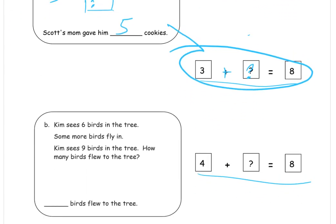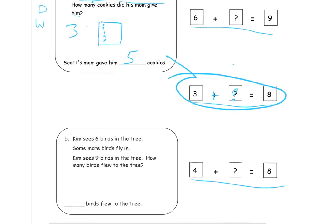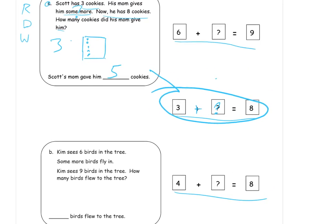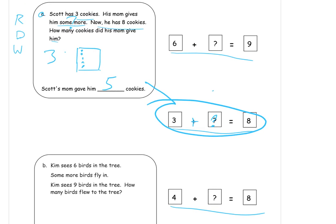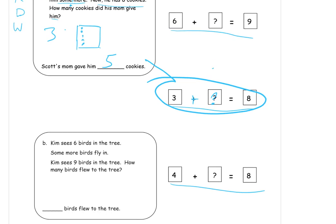I'm going to scroll back. I may have to zoom back out here and see how this works out. So, we're going to have to see all the number sentences. And we're looking at this story here. Kim sees six birds in the tree. Some more birds fly in. Kim sees nine birds in the tree now. How many birds flew to the tree?